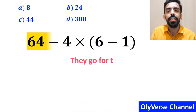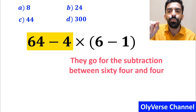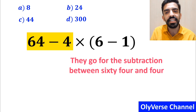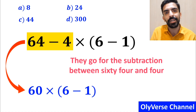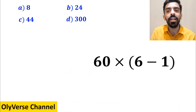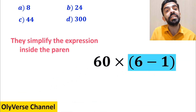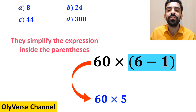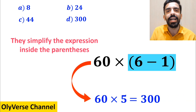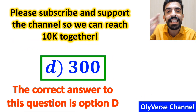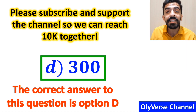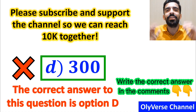In the next step, they go for the subtraction between 64 and 4 — highlighted in yellow — and rewrite the expression as 60 times (6 minus 1). Then they simplify the parentheses and replace it with 60 multiplied by 5, giving them the answer 300. They quickly conclude that the correct answer is option D. However, this answer is absolutely wrong.